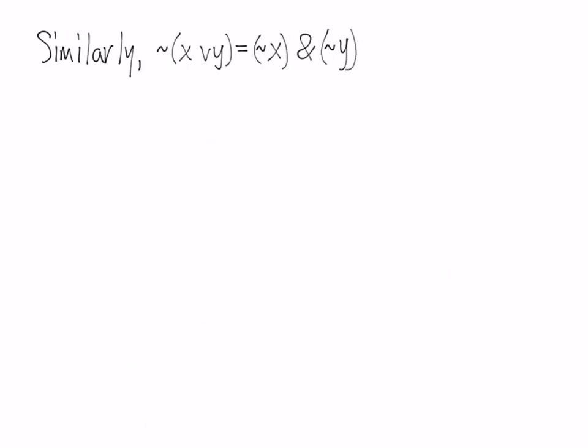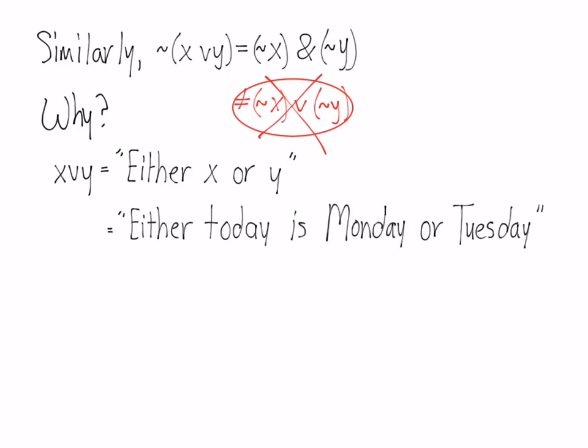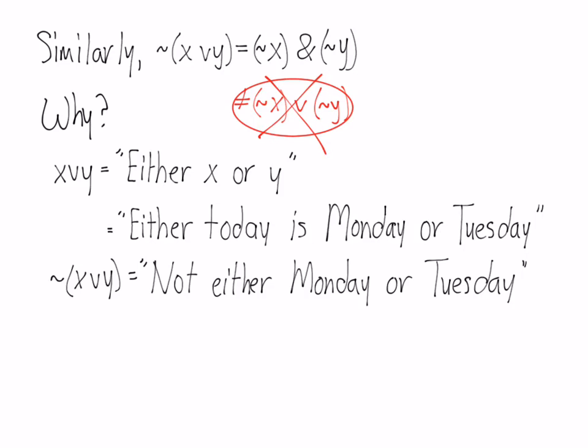Similarly, if you've got the negation of a disjunction, that becomes the conjunction of two negations. It is NOT the same as the disjunction of two negations. The reason why this happens is that the disjunction 'x or y' can be said 'either x or y.' For example, 'either today is Monday or Tuesday.' If you put a negation in front of that, you get 'it's NOT either Monday or Tuesday.'